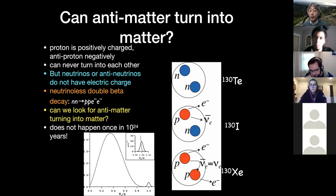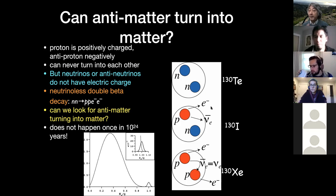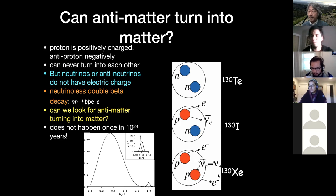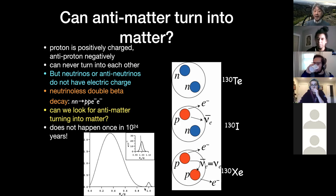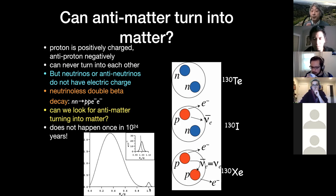In standard double beta decay, you expect tellurium to emit two electrons and also two neutrinos, and that happens regardless of whether the neutrino is a Majorana particle. In that case you're losing energy to the neutrinos, so measuring the sum of the two electron energies gives a continuous spectrum, similarly to single beta decay — which drove people crazy. You expect this continuous energy spectrum of the sum of the two electron energies.